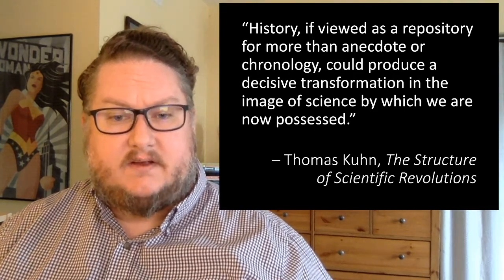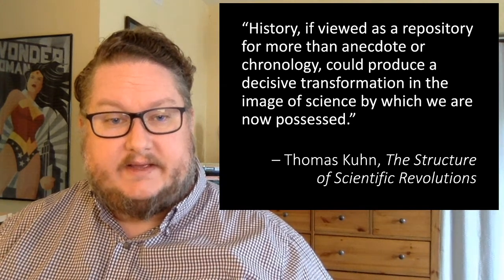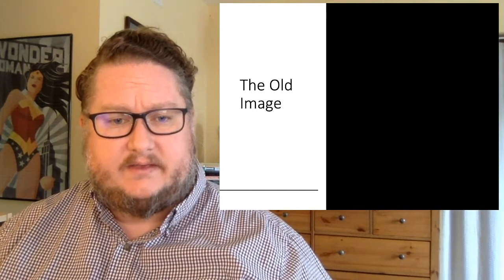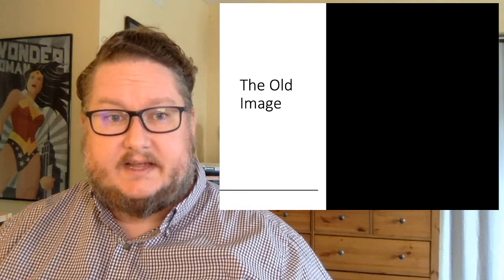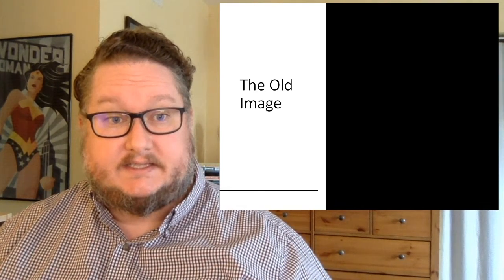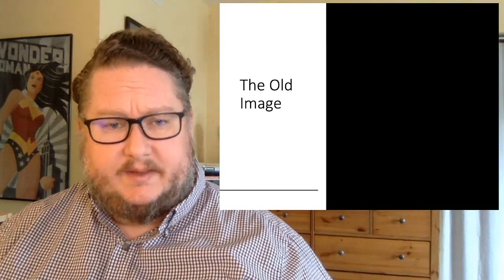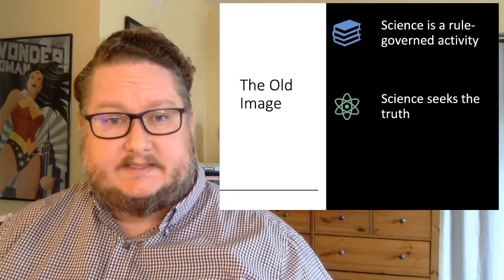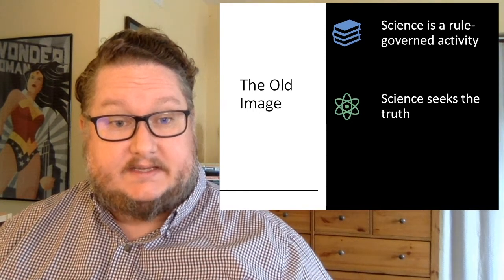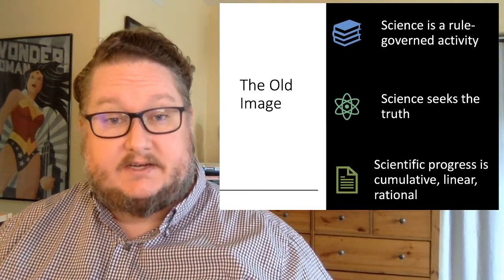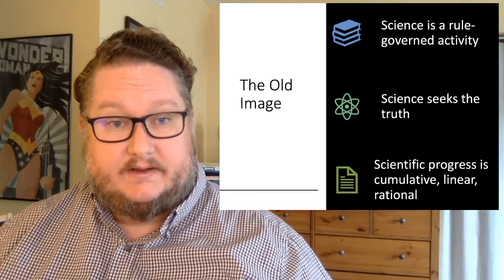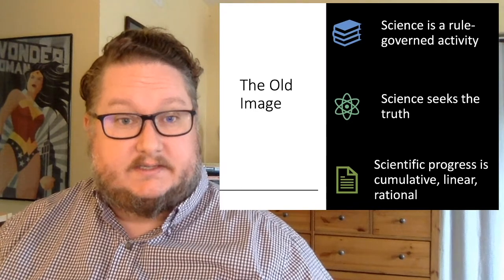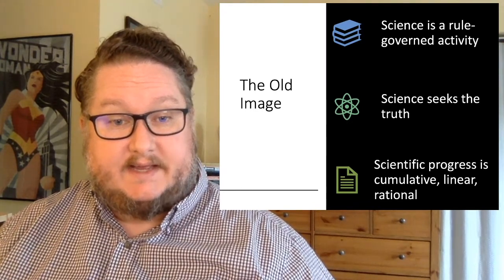So let's talk for a moment about images of science. There is what we might call the old image of science, and this image might be something you see in philosophers of science, it might be something that you see also among scientists and the general public, how they think about how science works. And according to the old image, science is a rule-governed activity, science seeks the truth, that's the main aim of science, and scientific progress is understood as cumulative, linear, and rational. Through the scientific method scientists progressively add more and more to our store of knowledge.